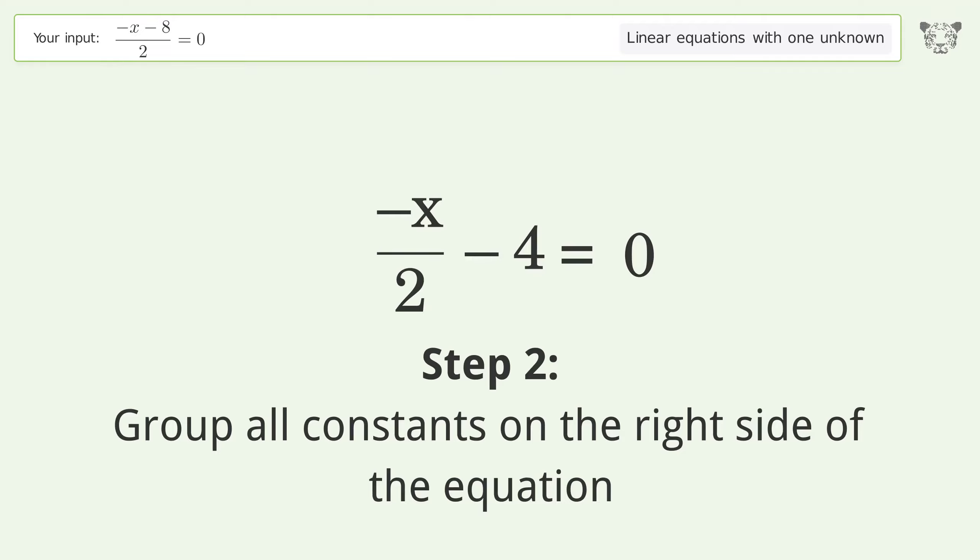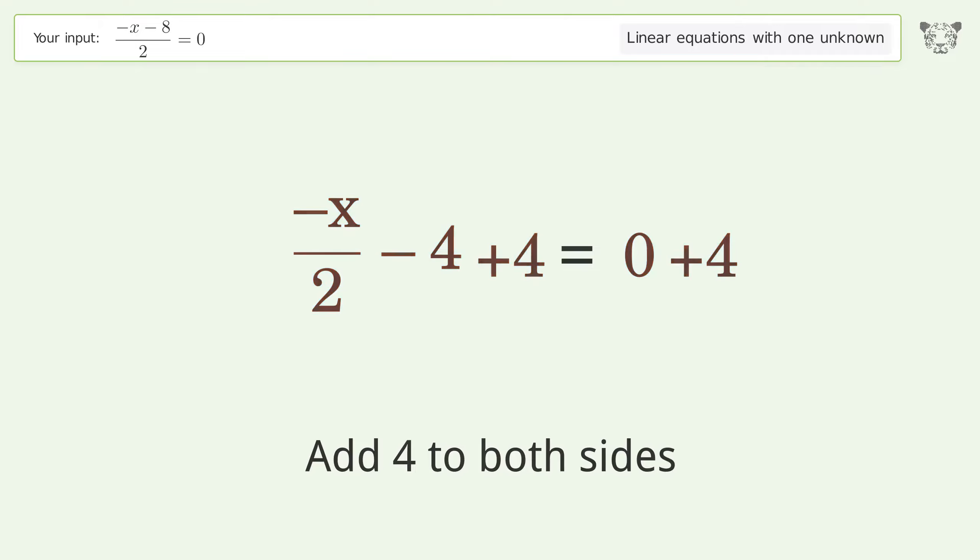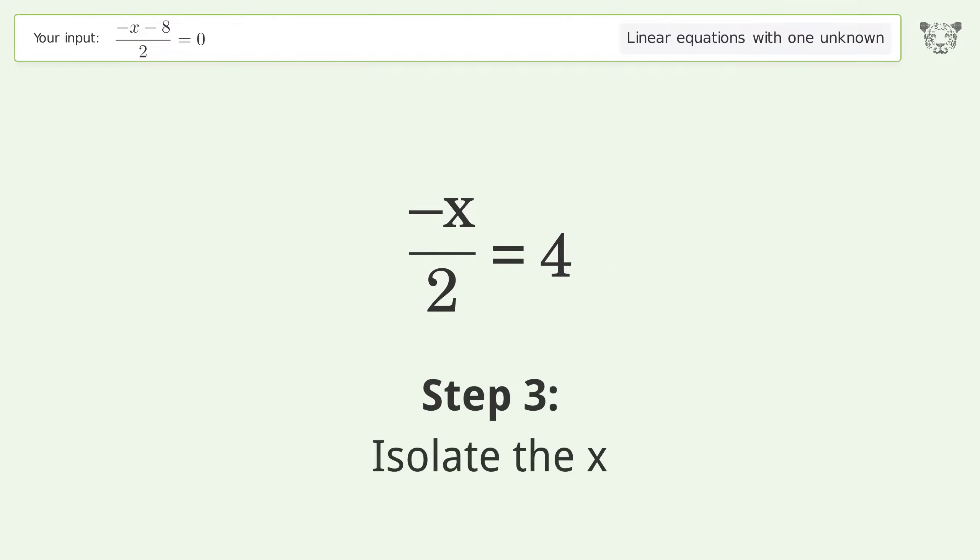Group all constants on the right side of the equation. Add 4 to both sides. Simplify the arithmetic. Isolate the x. Multiply both sides by 2.